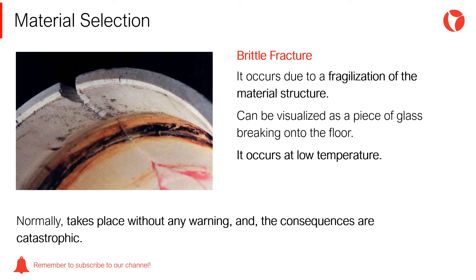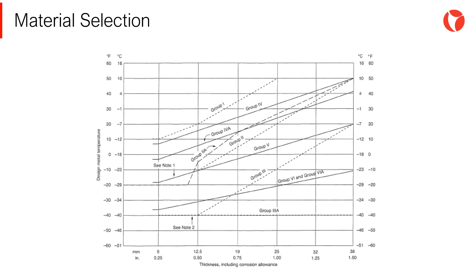Brittle fractures occur due to fragilization of the material structure — they can be visualized as a piece of glass breaking on the floor. This type of failure occurs at low temperatures, generally below the design temperature. The most dangerous aspect of such failures is that they take place without any warning and their consequences are catastrophic. To provide the material with adequate toughness, the requirements specified in section 429 and figure 41 of the code must be met. If a particular material or tank part does not meet these requirements, an impact test can be performed to accurately determine the properties of the material.